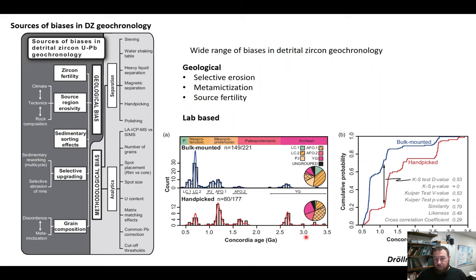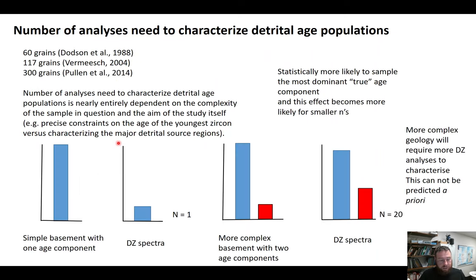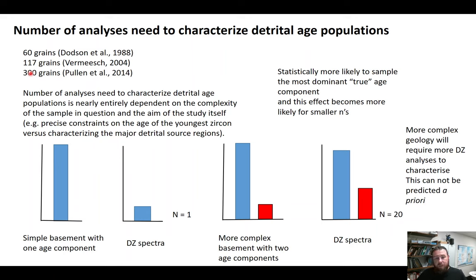If we want to minimize some of these laboratory biases, we could potentially try the fast ablation approach. Fast ablation basically aims to reduce our analytical time and get through more analyses. The number of grains needed to characterize a population ever increases, because it really depends on the geological complexity of the system and can't really be predicted a priori.